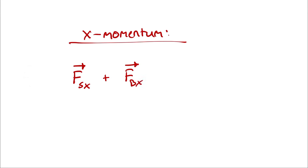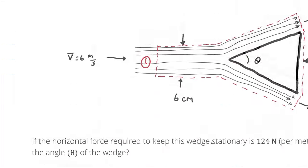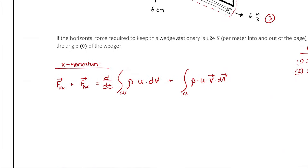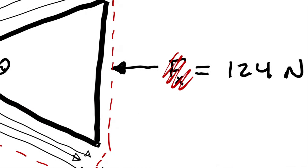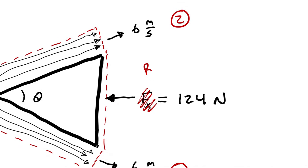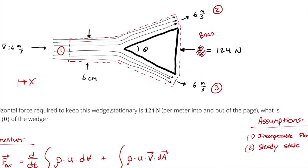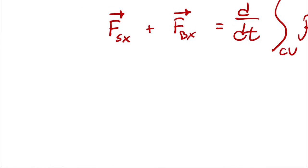Next, I'll write out the x-component of conservation of momentum and simplify by neglecting irrelevant terms. I have Fx as my label for the force in the x-direction, and I'm defining the x-axis as positive to the right. That means Fx is in the negative direction, so to avoid confusion I'll give it a different name — let's go with Brian. The Brian force is to the left, so I'll plug it in as a surface force acting on the surface of my control volume.